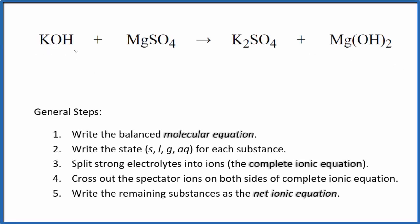Let's write the balanced net ionic equation for KOH plus MgSO4. This is potassium hydroxide and we have magnesium sulfate. So the first thing we need to do with net ionic equations, we have to balance the molecular equation. This is the molecular equation.